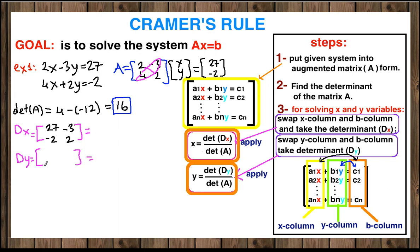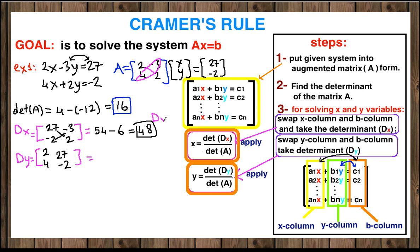DY will be found by switching the Y column with the B column. The X column — 2 and 4 — stays as is, and instead of the Y column we write 27 and negative 2. Now we take the determinants. The determinant for DX is 27 times 2 which is 54, minus negative 2 times negative 3 which is positive 6. So 54 minus 6 is 48; DX equals 48.